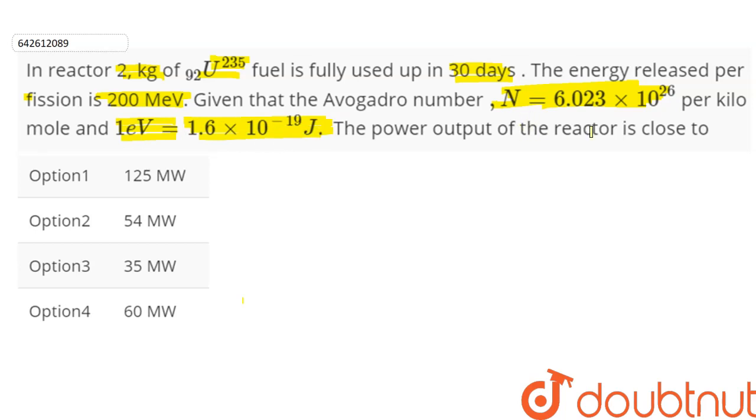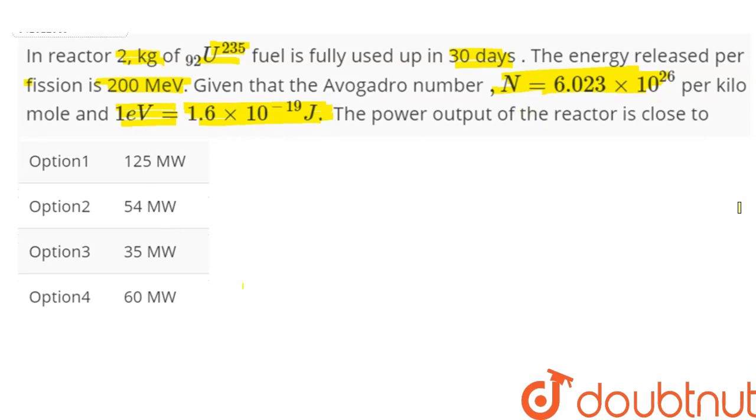The power output of the reactor is close to: option 1, 125 megawatts; option 2, 54 megawatts; option 3, 35 megawatts; and option 4, 60 megawatts.